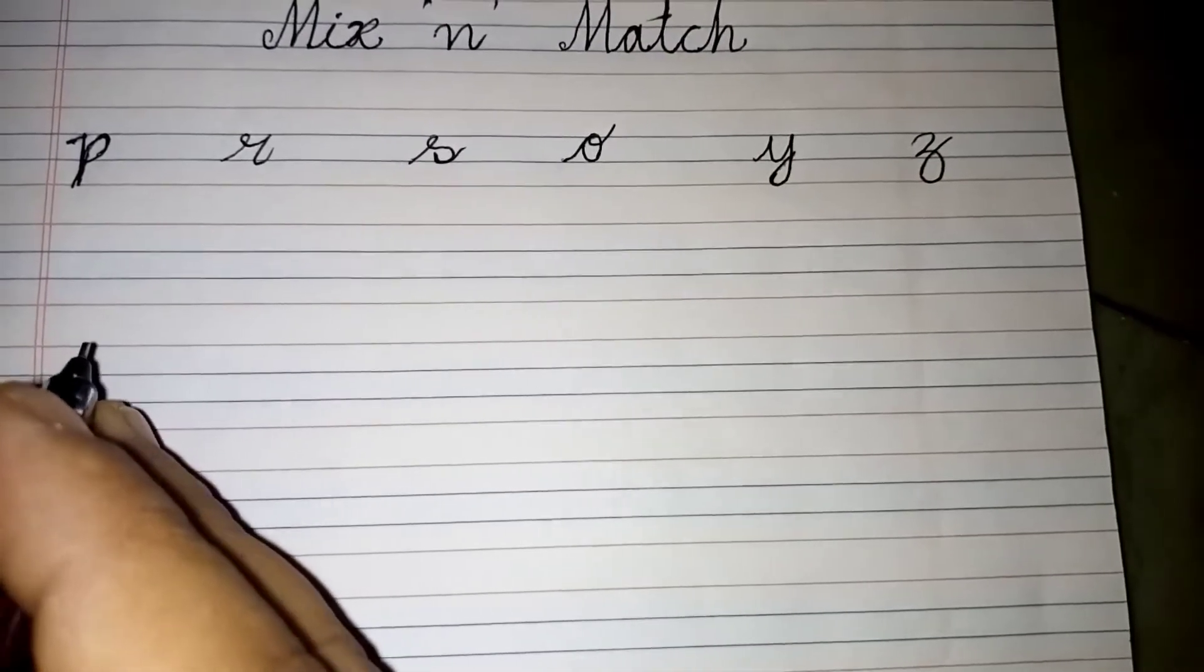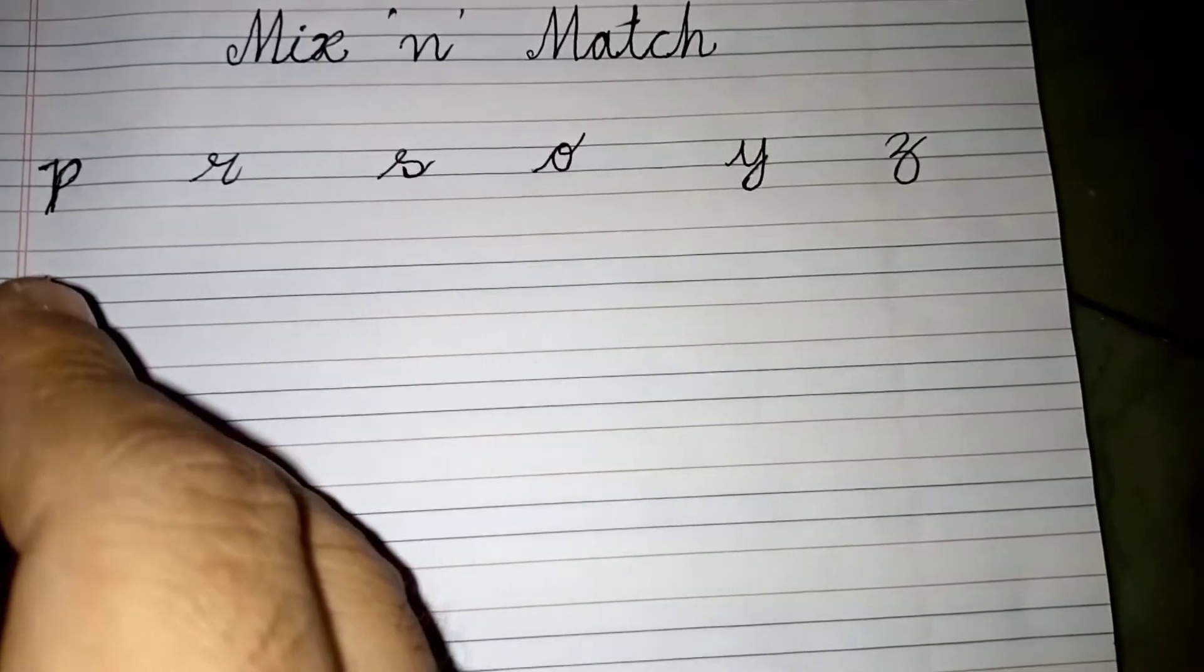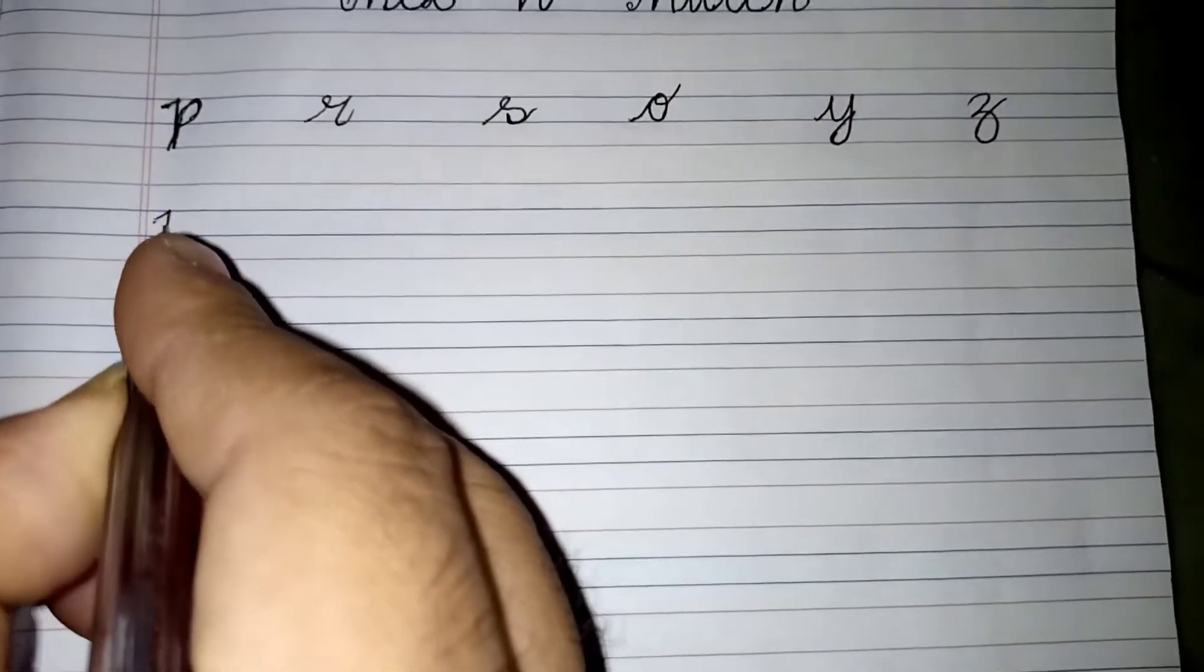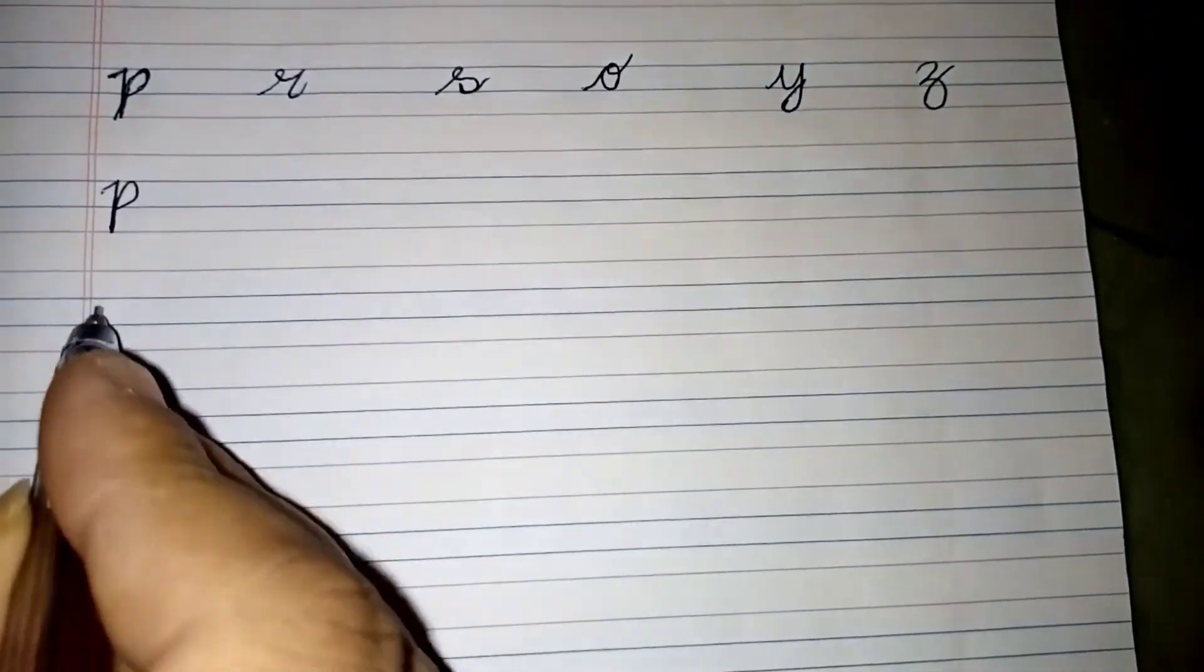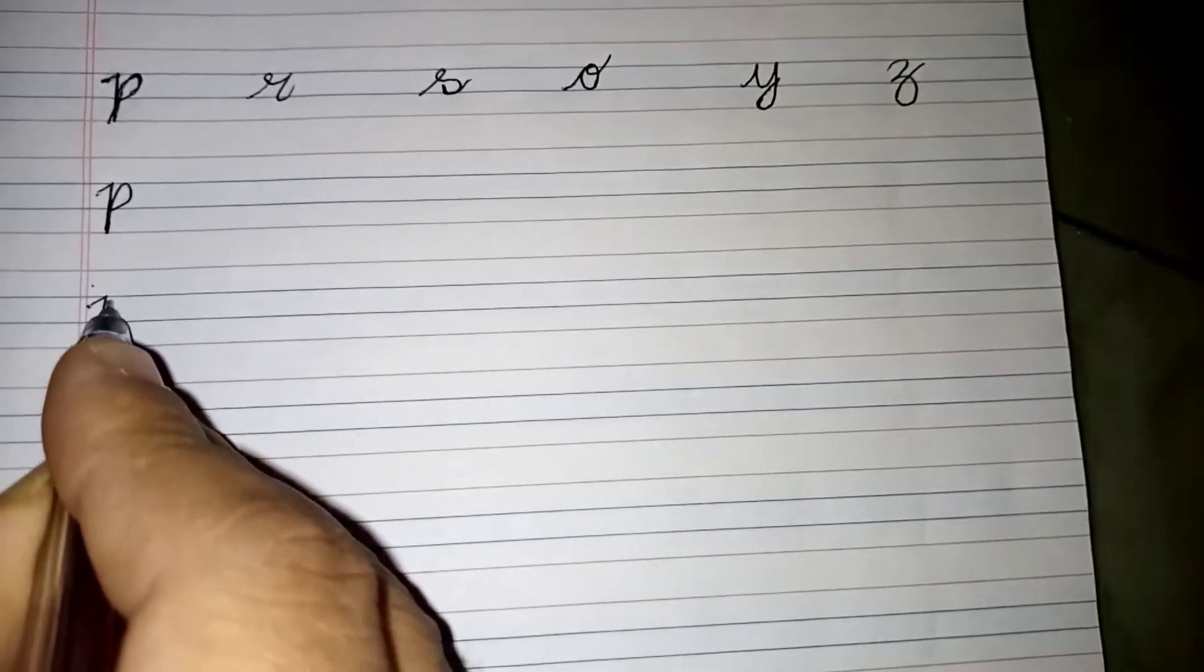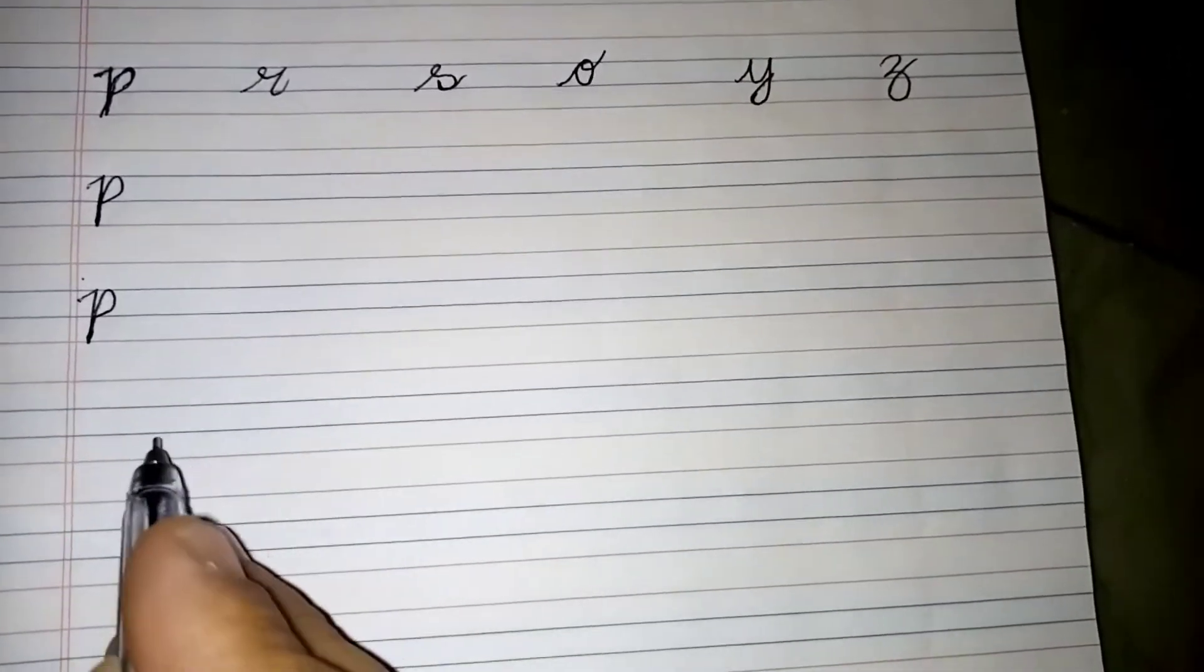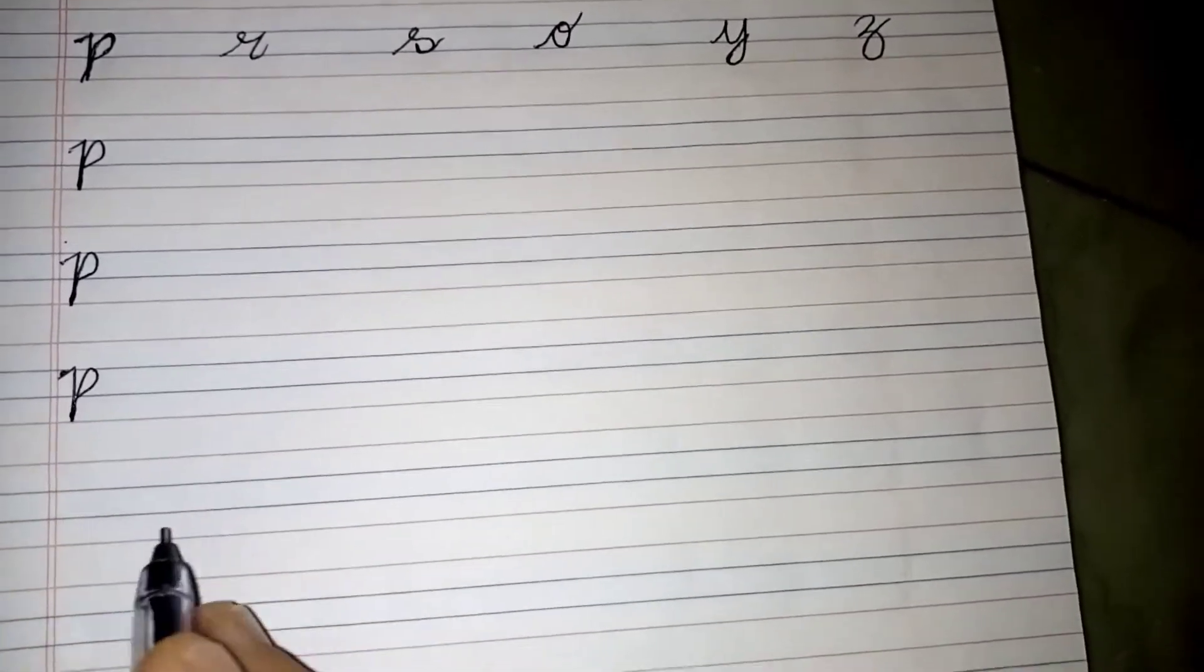These are called mix and match letters. Let's practice with p. It comes like this, can you see this? Go up and make it like this: p. Make it touch to the bottom line and like this, p, bottom line and up.